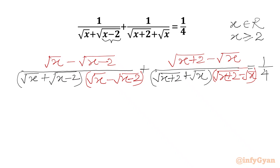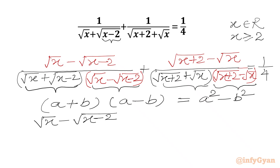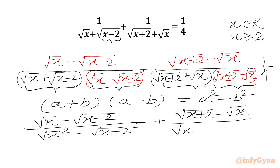Now in the denominator we are getting an (a plus b)(a minus b) form. We can apply the identity: a plus b times a minus b equals a squared minus b squared. Applying this, the denominator becomes square root of (x plus 2) whole square minus square root x whole square, giving us the RHS equal to 1 over 4.